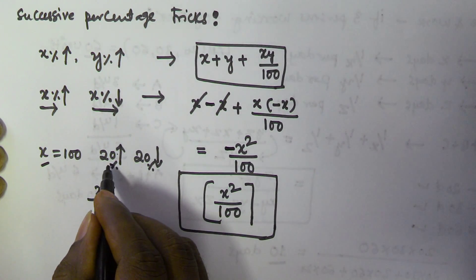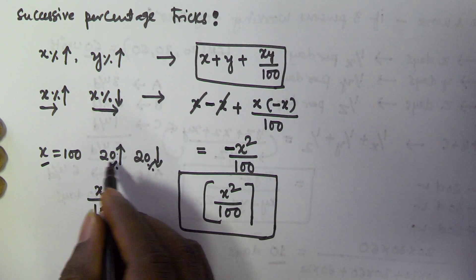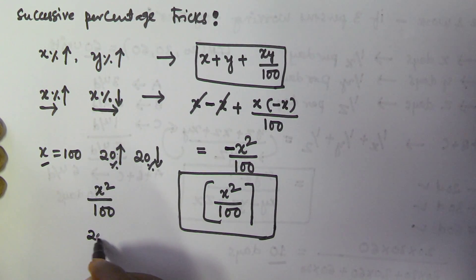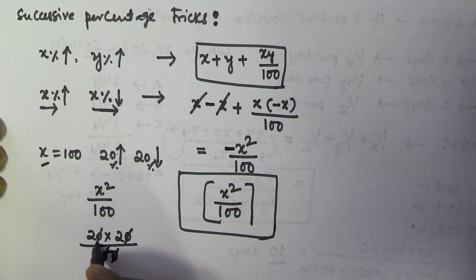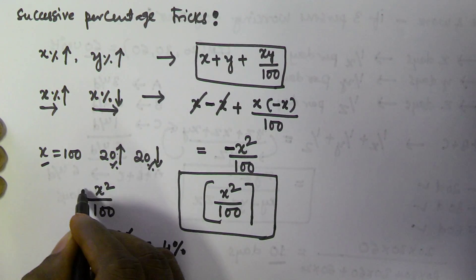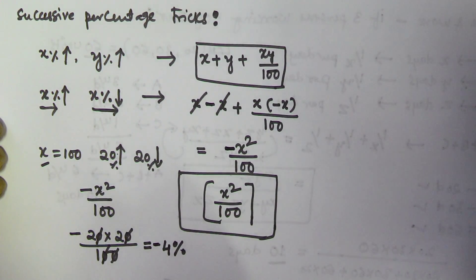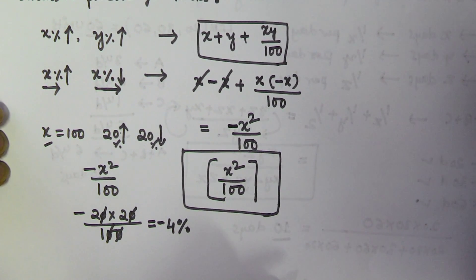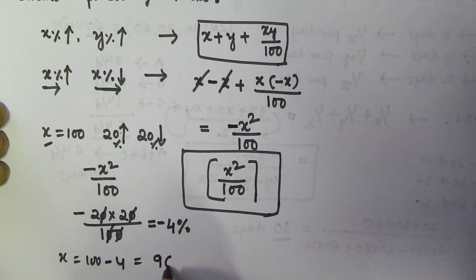Here x is 20, so the decrement is 20 squared by 100, which equals 400 by 100, that is 4%. So the result is minus 4% — a 4% decrement. That means if the initial value is 100, the final value is 100 minus 4, which equals 96.